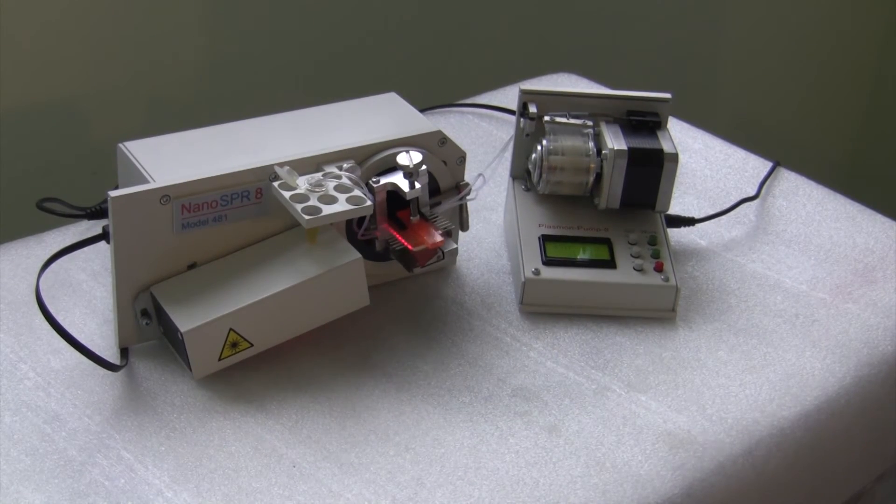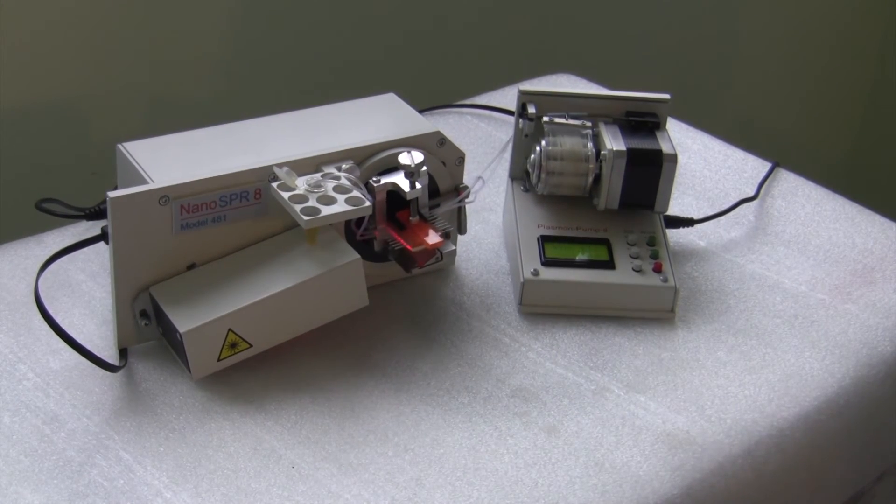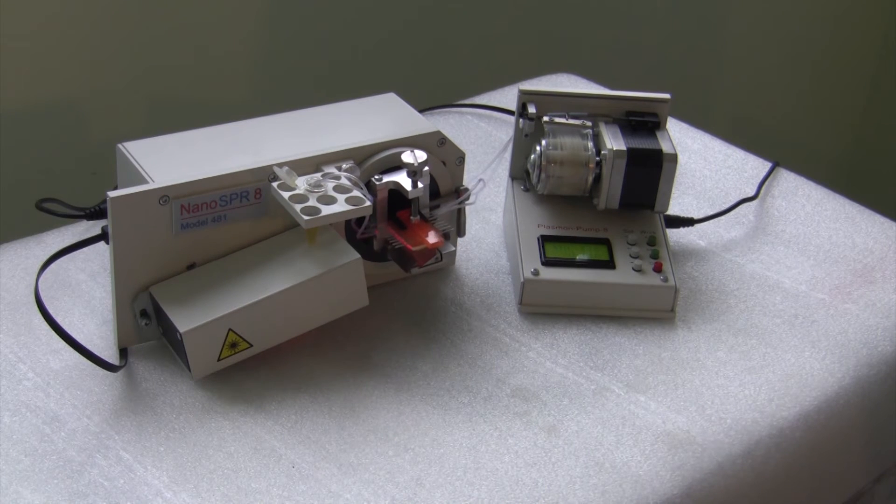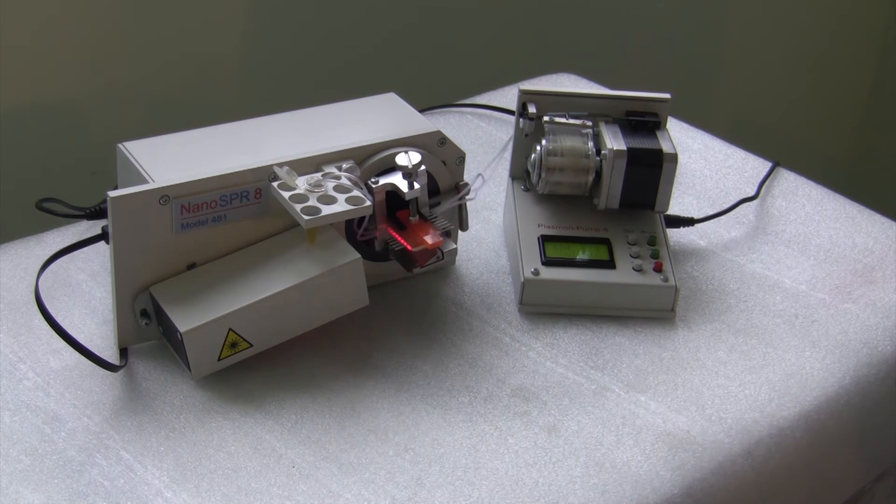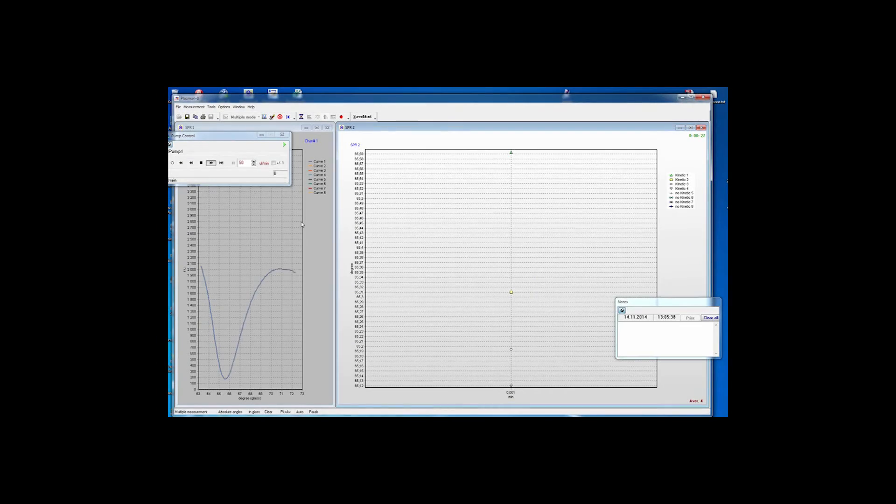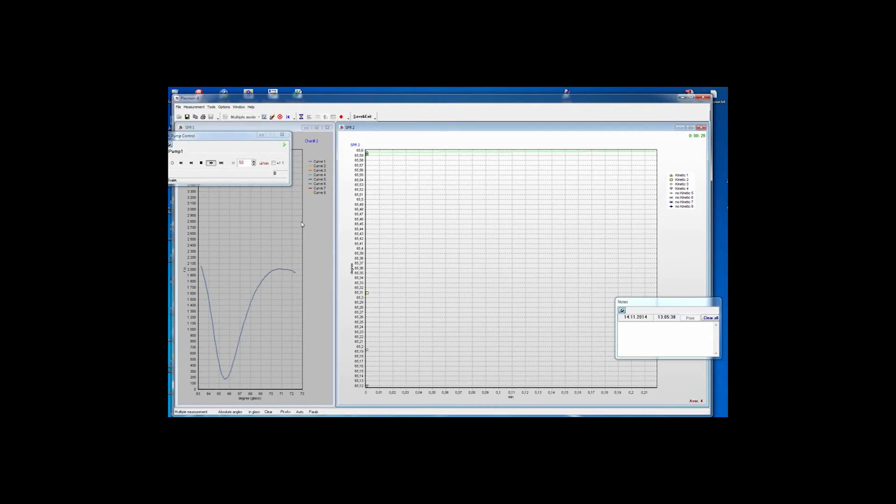In multiple mode of operation, we can measure sequentially a series of full curves. The maximal scanning range is 16 degrees. In device software, a left side window shows full curves for each measurement channel, right side kinetics.